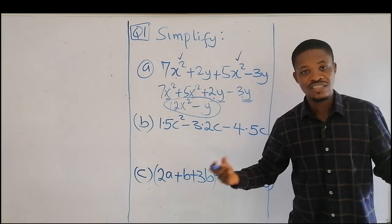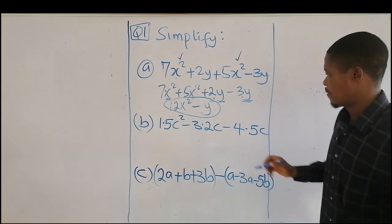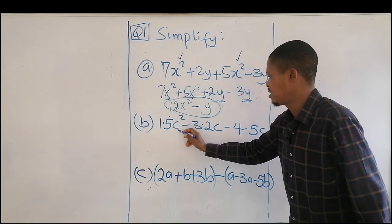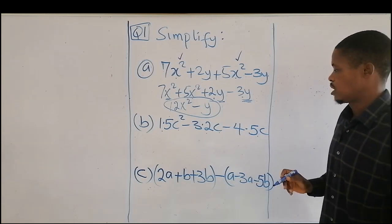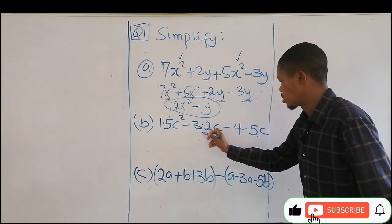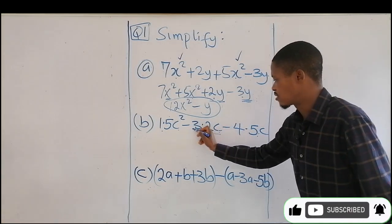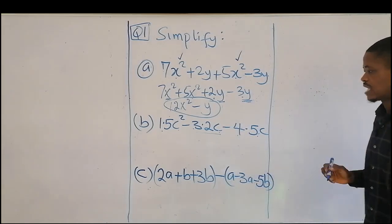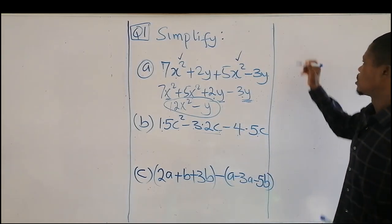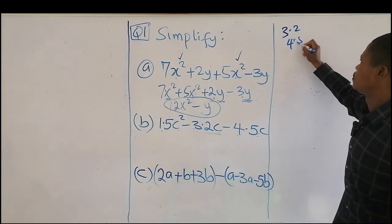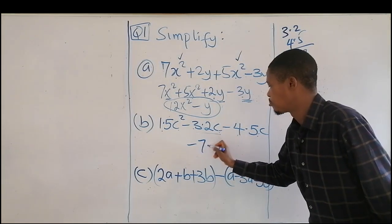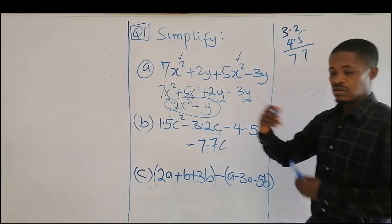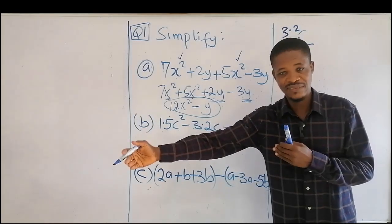Next question: 1.5c² - 3.2c - 4.5c. The letters are the same, but we're having -3.2 - 4.5. So that will be 7.7, giving minus 7.7 when you are adding negative, negative—it's going to give you negative.